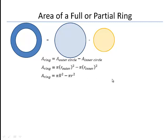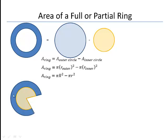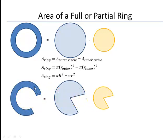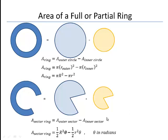We can also apply this concept to partial rings. For the dark blue band shown, we take the larger sector and subtract the smaller sector to get the area of the partial ring, or sector ring. Conceptually, the area of the sector ring equals the outer sector area minus the inner sector area. Using the one-half r squared theta formula (theta in radians), we use the larger radius for the outer sector and the smaller radius for the inner sector.